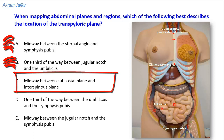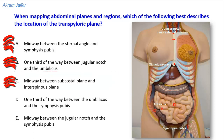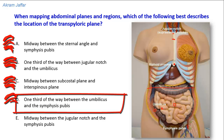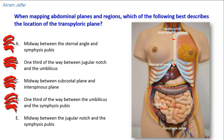Option C — midway between the subcostal plane and the interspinous plane — is also wrong. The subcostal plane lies at the level of L3, which implies the transpyloric plane would be located below that, between the subcostal plane and the plane passing between the two anterior superior iliac spines. Option D — one-third of the way between the umbilicus and the symphysis pubis — is also wrong, as this indicates a lower position. The transpyloric plane is located above the umbilicus, not below it.